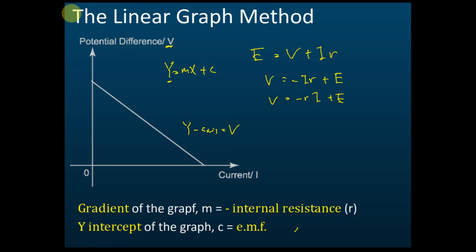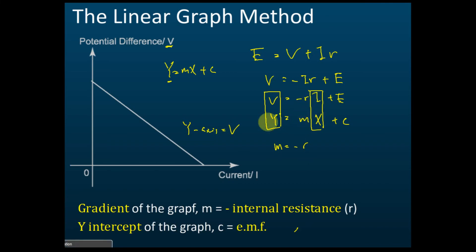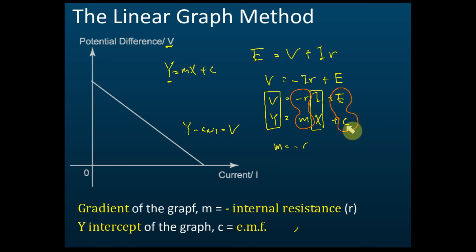Now we compare this equation with y = mx + c. The y-axis is V, and the x-axis is current I. From the comparison, the gradient m equals negative internal resistance, and the y-intercept c equals the EMF.